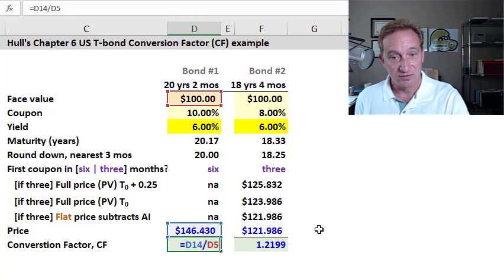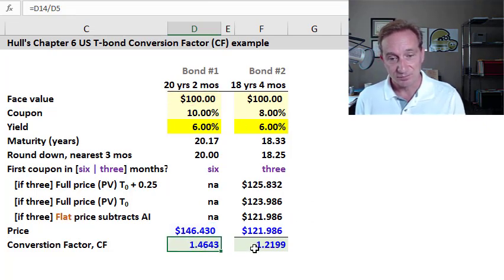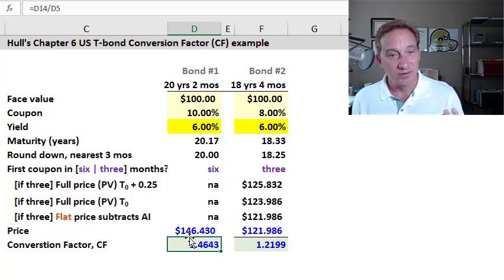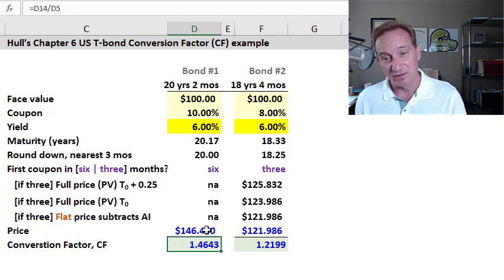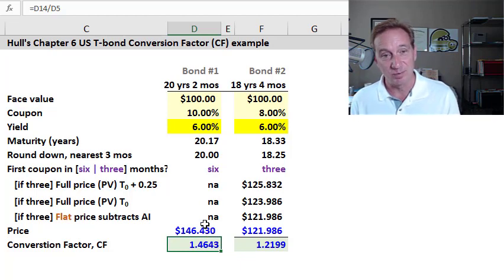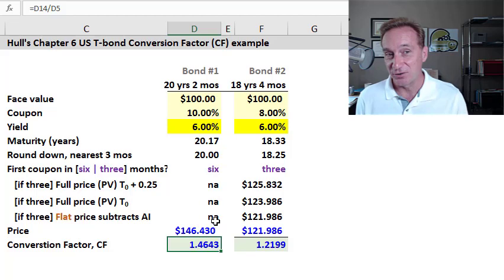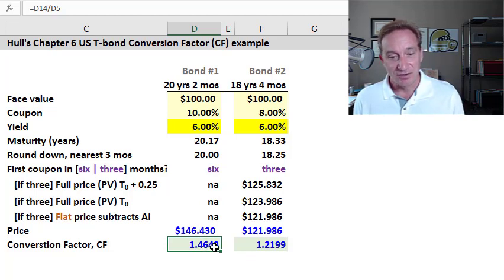Okay, then the conversion factor, you'll notice, just divides by the face value of 100. And this is mere scaling. We're used to seeing $146 because a price of $146.43 is really implicitly $146 per 100 face dollars. The conversion factor, specifically, is set equal to the quoted price the bond would have per dollar, not per $100. See that really subtle difference, but not really profound difference, such that these are equal. Their only difference is the division of 100. And so we have the conversion factor here for bond one.